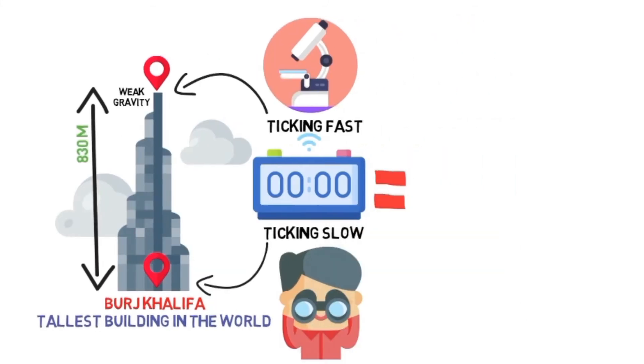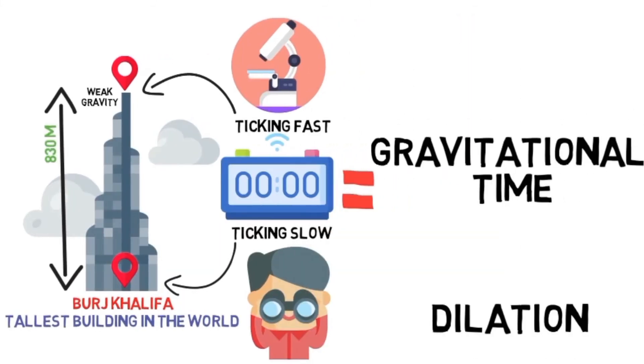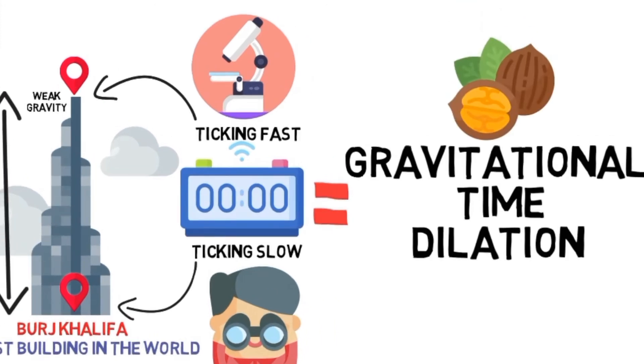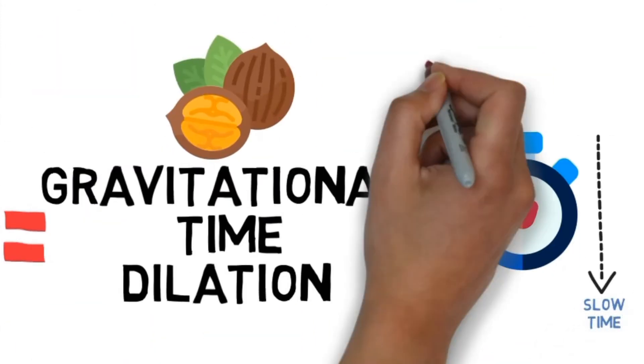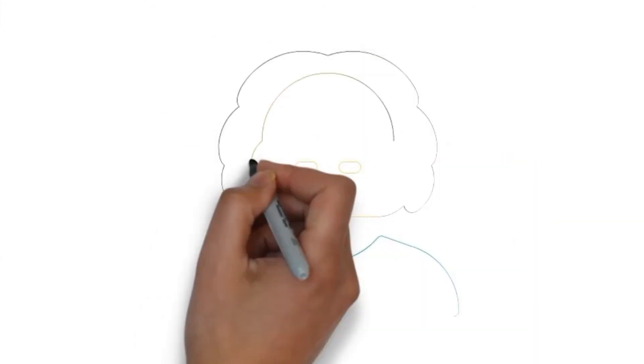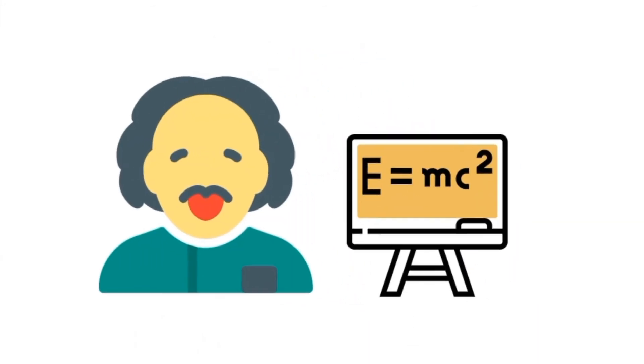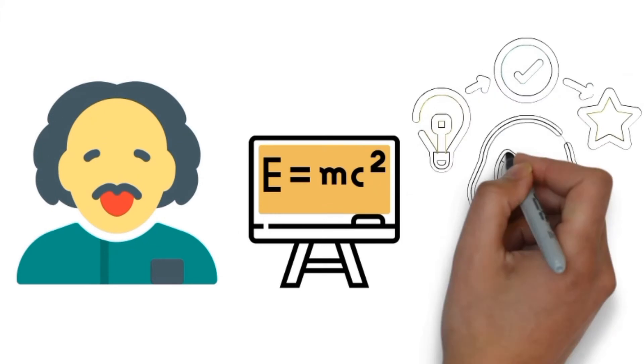This phenomenon of relative difference in time is known as gravitational time dilation. In a nutshell, it just means that time moves slower as gravity increases. It is predicted by Einstein's theory of general relativity and has been verified multiple times by experiments.